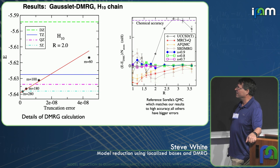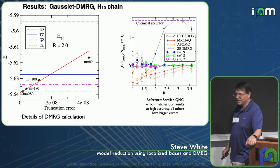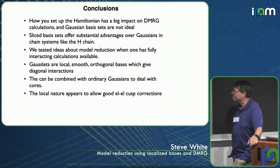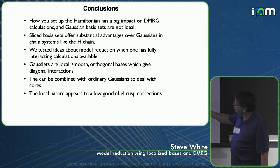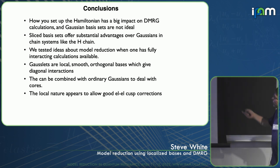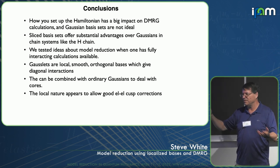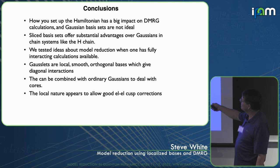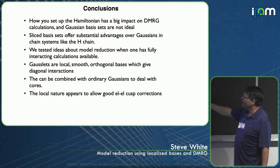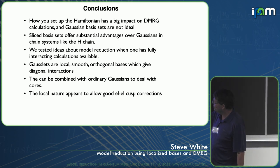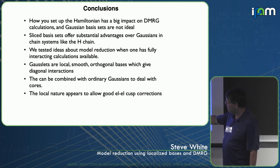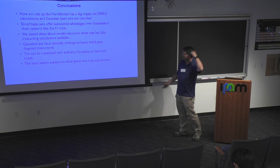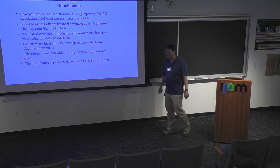So in conclusion: how you set up the Hamiltonian has a big influence on DMRG calculations. What you might think you know about what DMRG is useful for isn't necessarily true — it's not necessarily just good for static correlation. Slice bases offer substantial advantages over Gaussians for systems like the hydrogen chain. We showed how to do model reduction to effective Hubbard models. And we have the newer approach of gausslets, which give efficiency and a number of different advantages, though they're still very much in development.